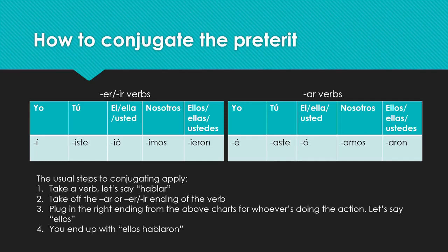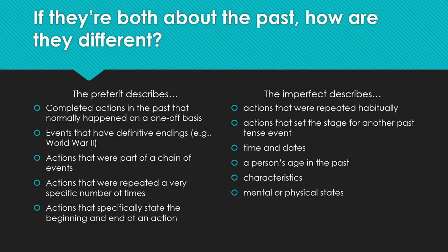So if they're both about the past, how are they different? The preterite describes completed actions in the past that normally happened on a one-off basis — events with definitive endings, like World War II. You would never say 'World War II used to end in 1945' — that doesn't make sense. The preterite also describes actions that were part of a chain of events, repeated a very specific number of times, or actions that specifically state the beginning and end.